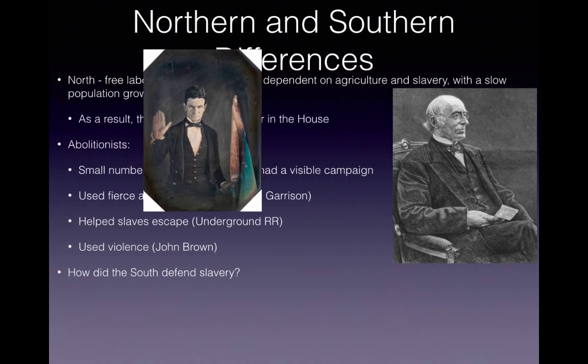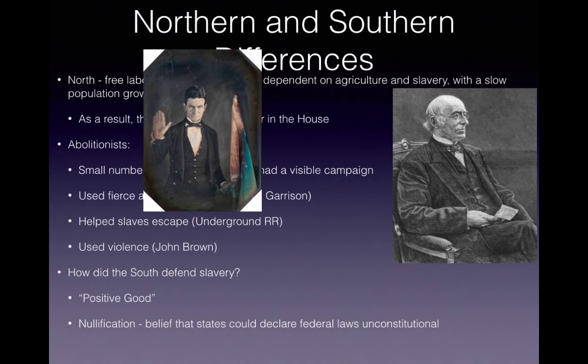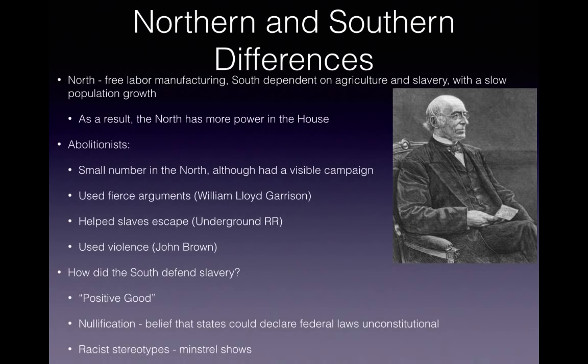How did the South defend slavery in the face of the abolitionist movement? People like John C. Calhoun argued that slavery was a positive good. They also used nullification, believing that states could declare federal laws unconstitutional — that states had lots of rights to defend this institution. Furthermore, they used racial stereotypes, things like minstrel shows, which stereotyped and mocked African Americans.